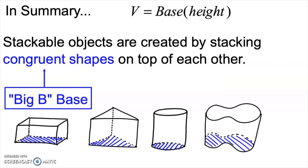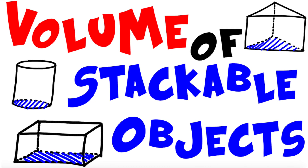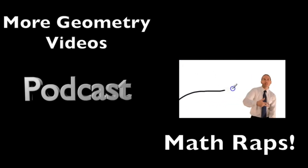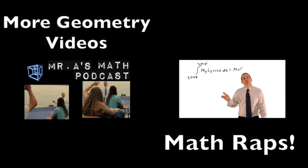In summary, whether you're stacking rectangles, triangles, circles, weird shapes, or polygons, it doesn't matter. If you're stacking two-dimensional objects on top of each other and each object is congruent to the last one, then you are creating a stackable object. The volume of any stackable object is simply Big B Base times height, where Big B Base is the area of the shape you're stacking and the height is how high you stacked it. If you enjoyed this video, please give it a like, subscribe to my channel, feel free to leave a comment below, and as always, have a great day.